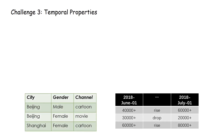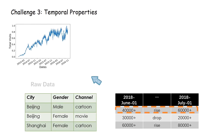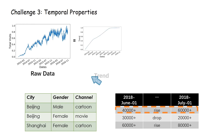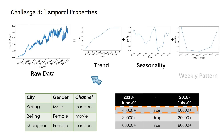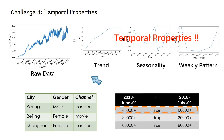Challenge three: temporal property. Look at this one-year time series of one attribute combination. It's subject to a trend of years, seasonality of months, and repeated patterns of weeks.